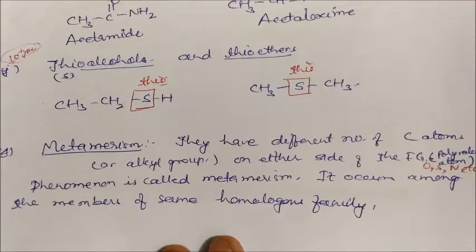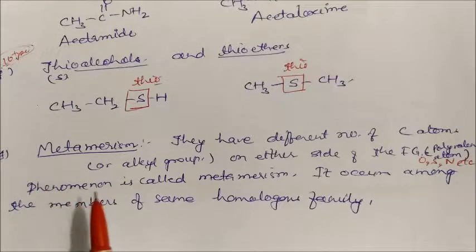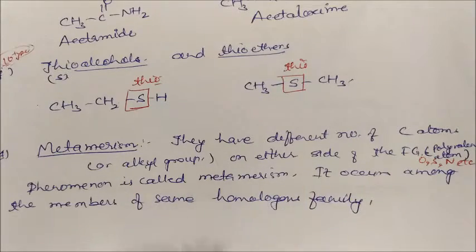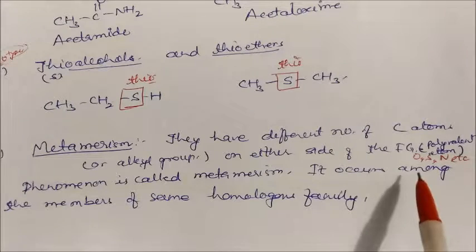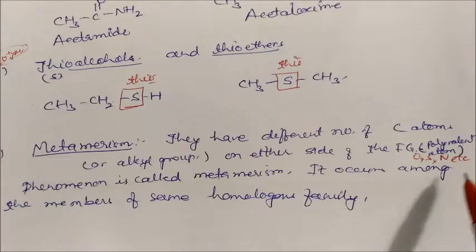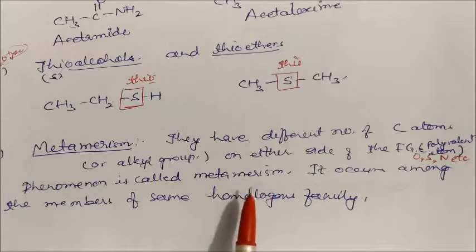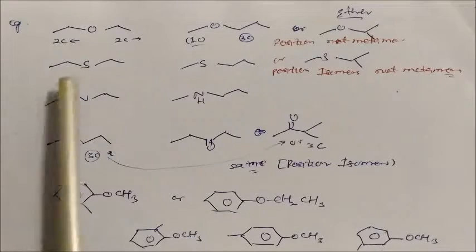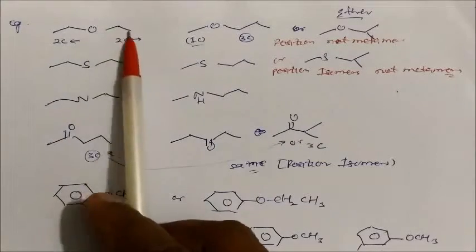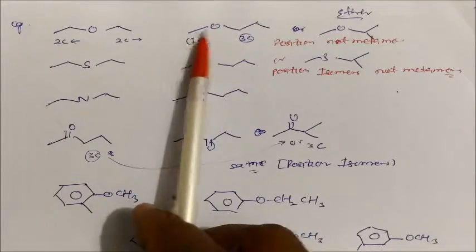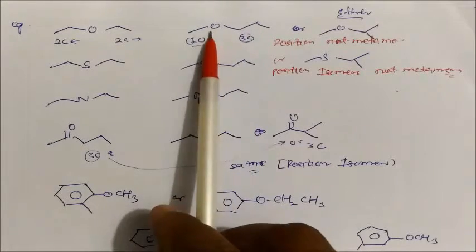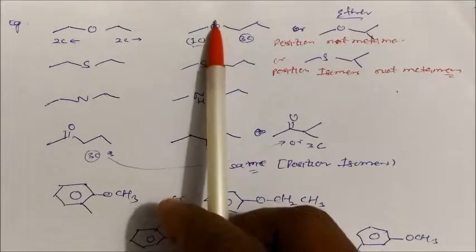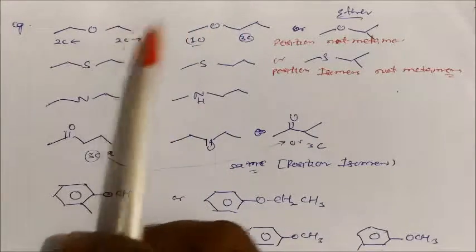Now we deal with metamerism, a structural isomerism type. Metamers have different numbers of carbon atoms or alkyl groups on either side of the functional group or polyvalent atom. Polyvalent atoms include oxygen, sulfur, and nitrogen, which have more than one valence. For example, diethyl ether (two carbons on each side of oxygen) and methyl propyl ether (one carbon on one side, three on the other) are metamers — the number of carbons around the functional group is different.